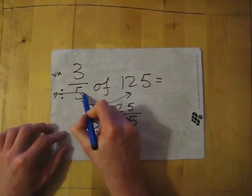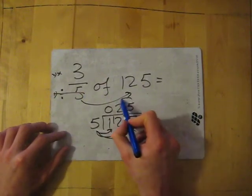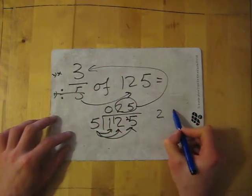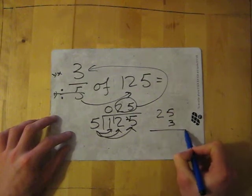So we've done the first part, now we need to do the second part. We need to times this answer by the top. So we do 25 times by 3.